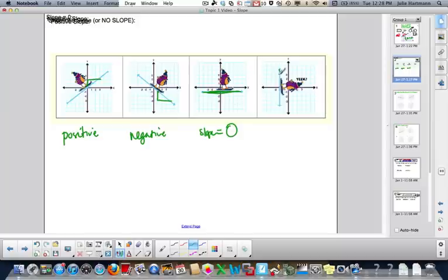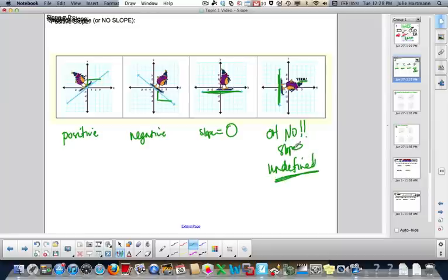On the other hand, when you get to a slope that looks like this, you get to that kind of hill, and you say, eek, or oh no, that means no slope. Or what we call an undefined slope.